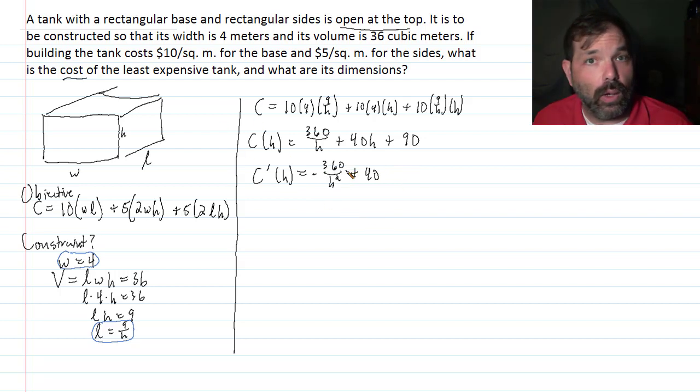We are trying to find now any critical numbers. And I guess I should mention, let's think about this a little bit. Let's go back to our cost model, our C of H, and let's think about the domain of this function. If C is a function of H, we know that H must be positive. The height of this rectangular solid must be positive. So let's keep that in mind as we move to the next step.